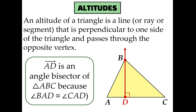The next type of special segment is an altitude. An altitude is a ray, line, or segment that is perpendicular to one of the sides of the triangle and passes through the vertex on the opposite side. It's similar to a perpendicular bisector, except perpendicular bisectors have to bisect the side — and that's not true for altitudes. In fact, you can visually see that AD is not as long as DC.